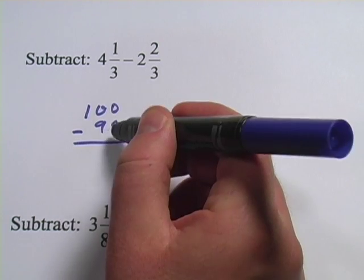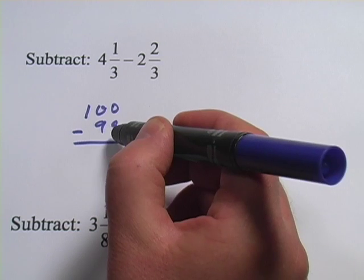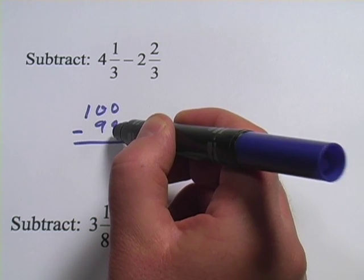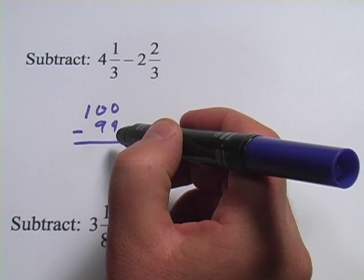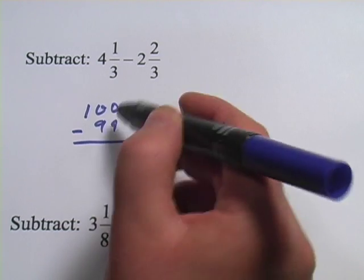You would start, the answer to that is one, but you would start here, zero minus nine. You can't do that because the zero is smaller than the nine, so you'd borrow.